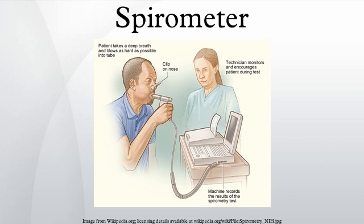There are various types of spirometers which use a number of different methods for measurement. A spirometer is the main piece of equipment used for basic pulmonary function tests. Lung diseases such as asthma, bronchitis, and emphysema can be ruled out from the tests.